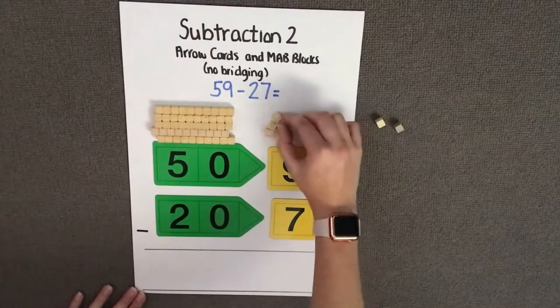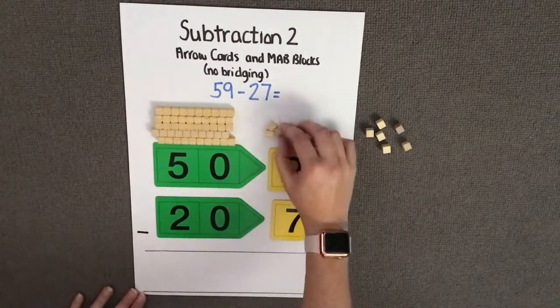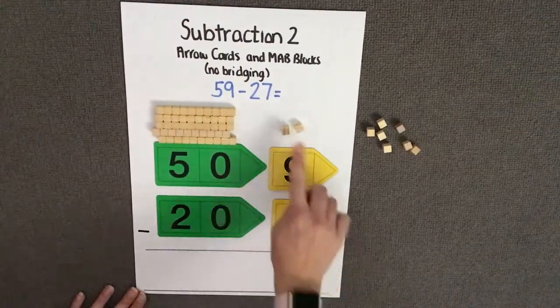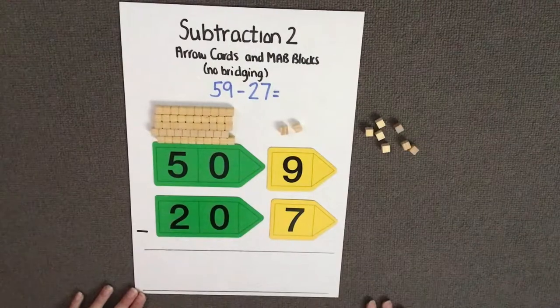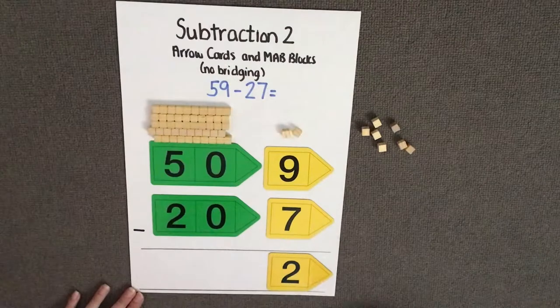1, 2, 3, 4, 5, 6, 7. As we can see, this leaves 2 blocks and therefore our answer for our ones would be 2. We can represent this using our 2 arrow card.